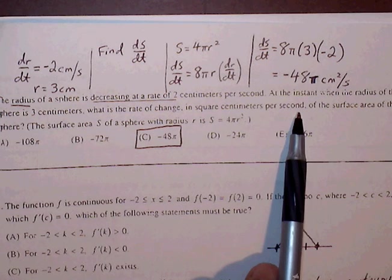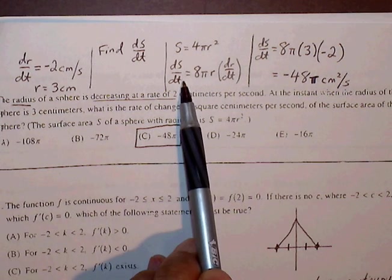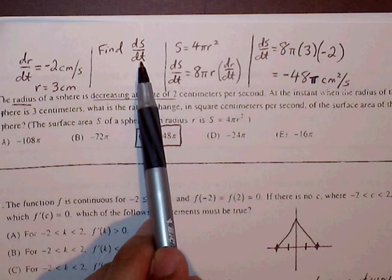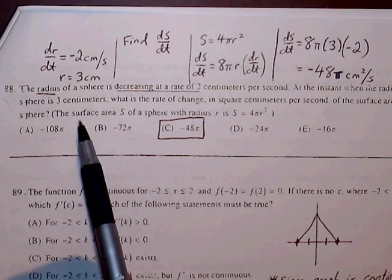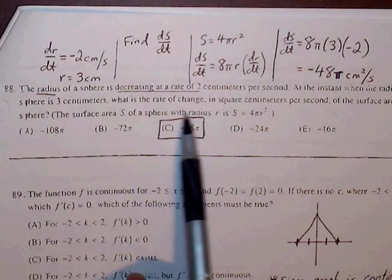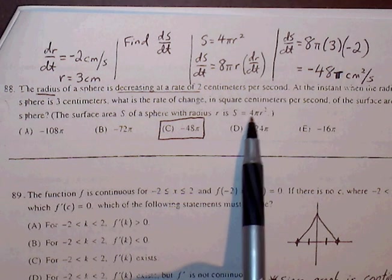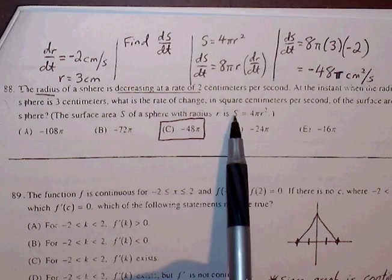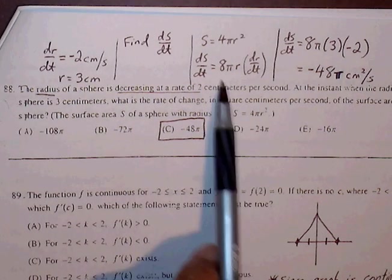So surface area is S, so we're going to let dS/dt represent the rate of change in surface area of the sphere. And so we're looking for dS/dt, and we're given that the surface area of a sphere is S equals 4πr². So let's just go ahead and find the derivative. So S becomes dS/dt. 4πr² becomes 8πr dr/dt.